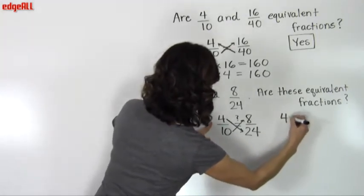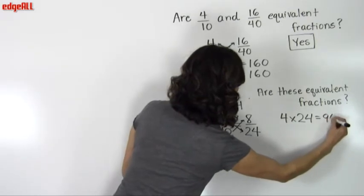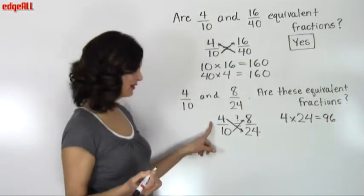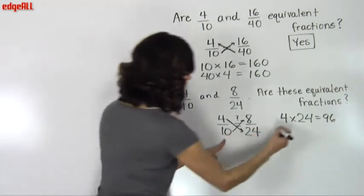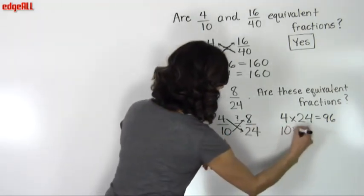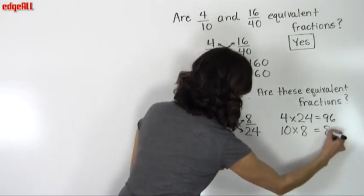So I have two calculations here that I need to do. 4 times 24 equals 96. And now I'm going to do 10 times 8, which we know is not equal to 96. 10 times 8 equals 80.